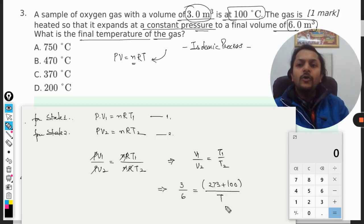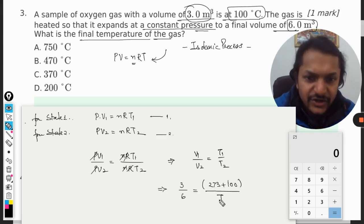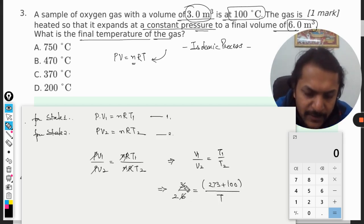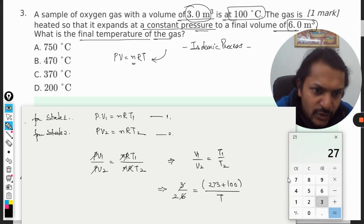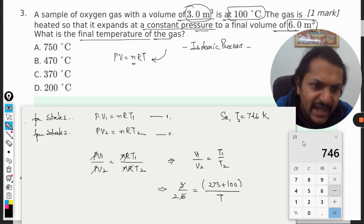So this will be 2, and 2 will be multiplied here, so our answer will be 373 multiplied by 2, that is 746. So in Kelvin, our second temperature will be 746 K.